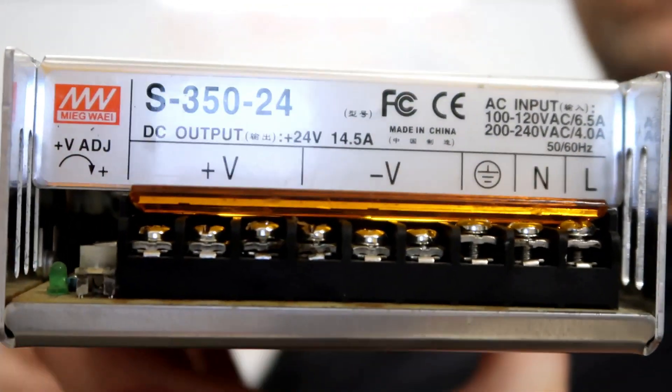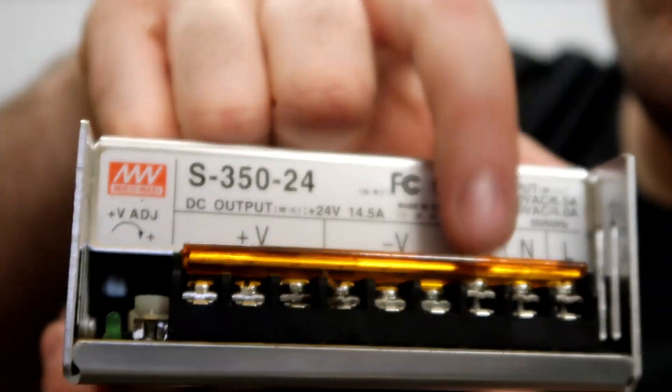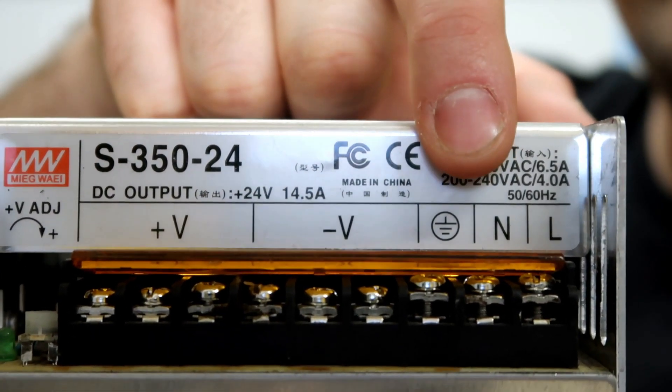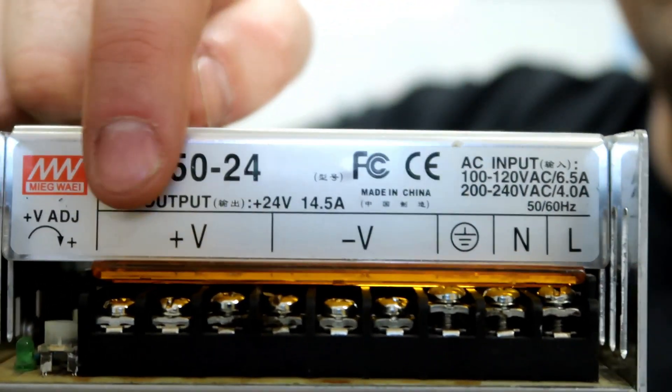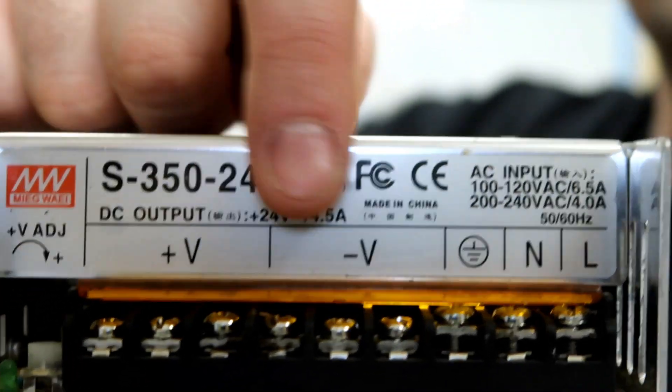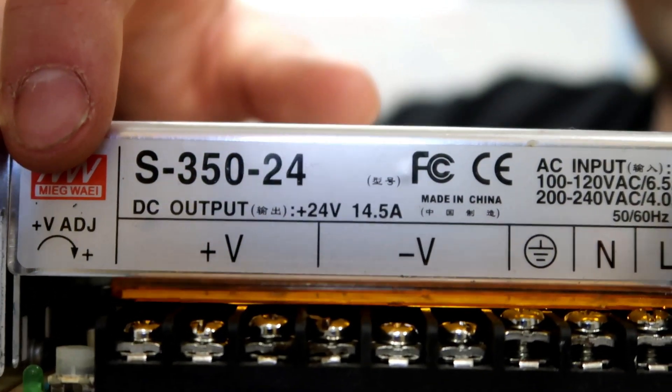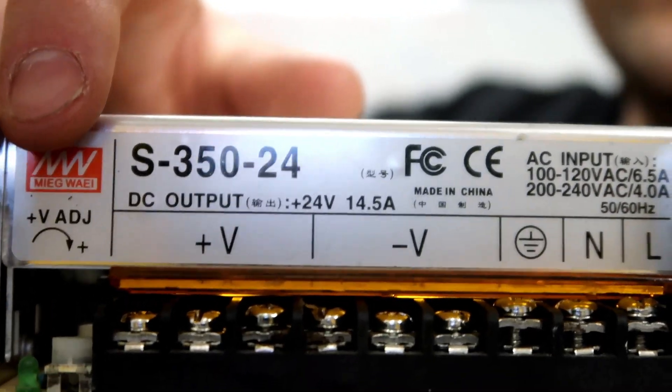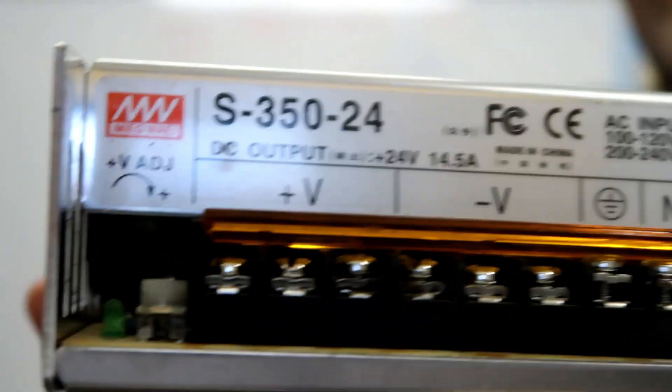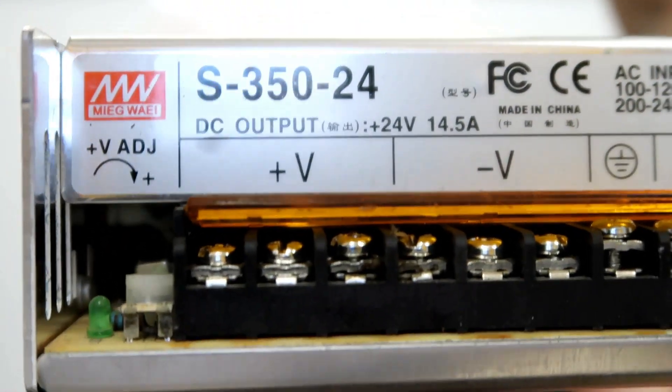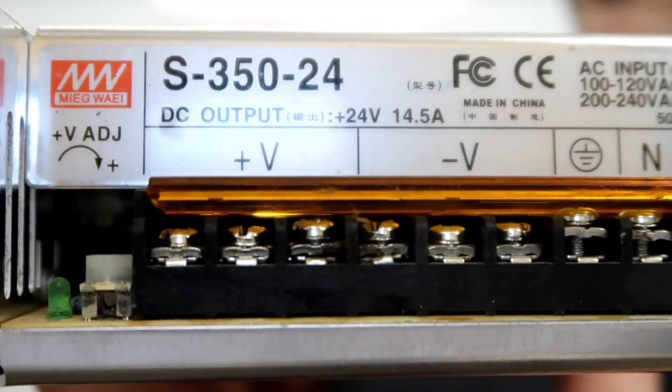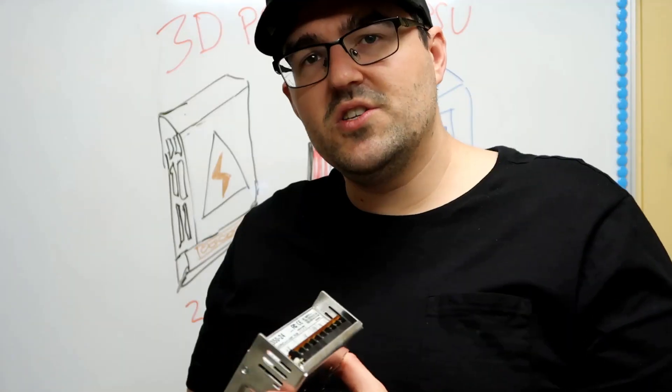On one side here is the live, neutral, and earth, and we also have the outputs being the voltage positive and the negative. Over on this side we have the adjustment for the voltage if we need to. In most cases we don't need to adjust those, and there's also an LED there to tell if it's actually going on.